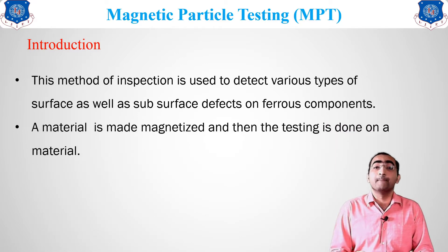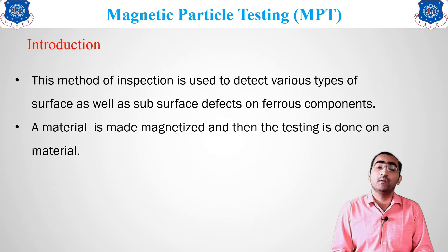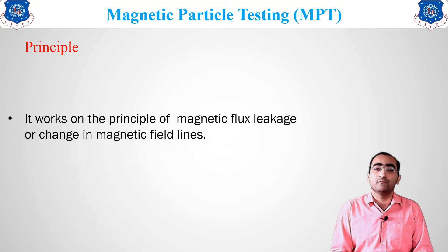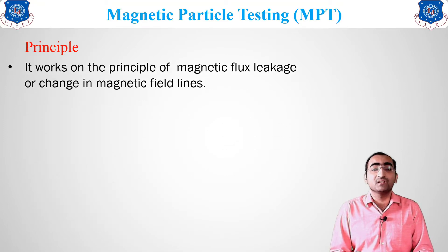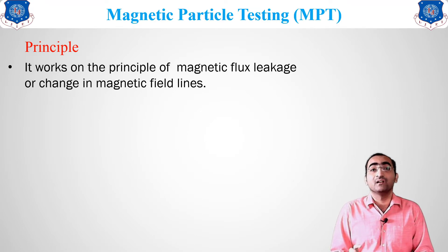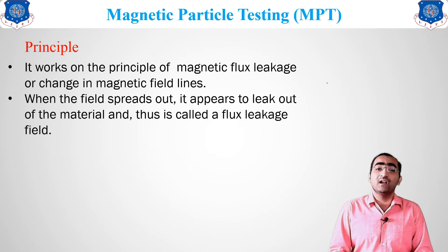The material is magnetized — that means magnetism is induced inside the material — and as a result we proceed with the testing. This method works on the major principle of magnetic flux leakage or the change in magnetic field lines. Magnetic field lines represent the region or area where the magnetic field exists. When the field spreads out, it appears to leak out of the material, which is known as a flux leakage field.